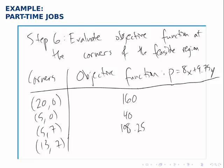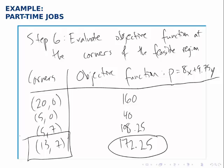Still, so far the first option is the best. Let's test the last one. If x is 13 — she spends 13 hours dog walking — and y is 7, or she spends 7 hours babysitting, then her earnings each week are $172.25. And now we've found the best possible earnings. The most she can earn each week, given the constraints, is $172.25, and that happens precisely when she spends 13 hours dog walking and 7 hours babysitting. Notice that combination satisfies all the constraints but it's also the best possible option. So by following this process, we've eliminated all her options and found the exact point that gives her the optimal result.